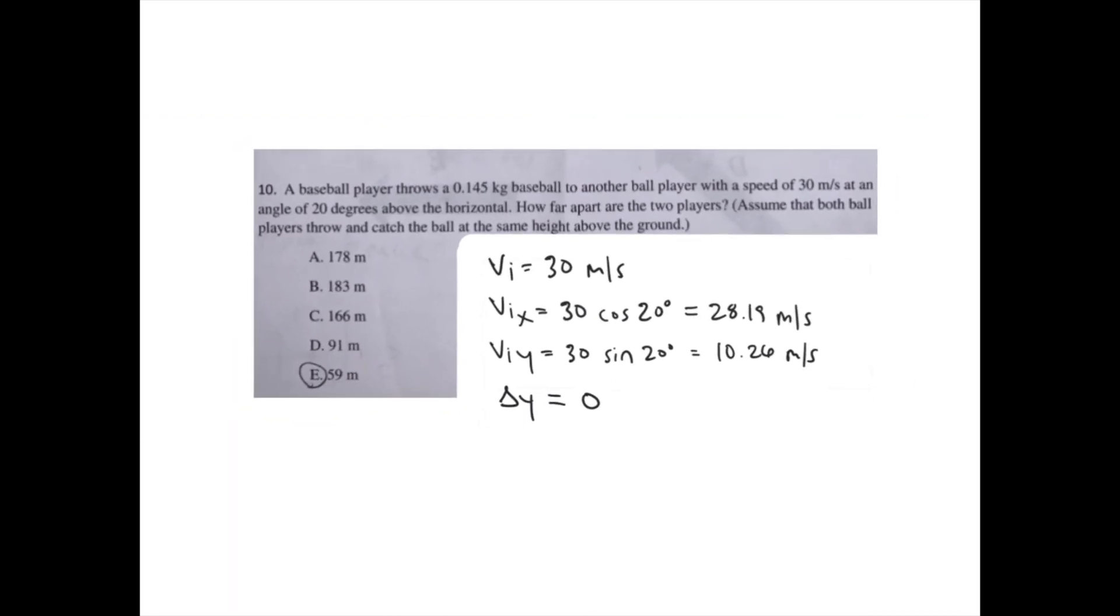With this information, we can use one of the kinematic equations in order to solve for time. Gravity on Earth is negative 9.8 meters per second squared.